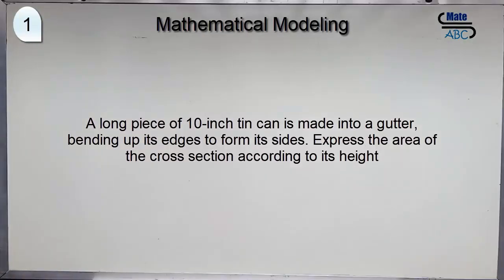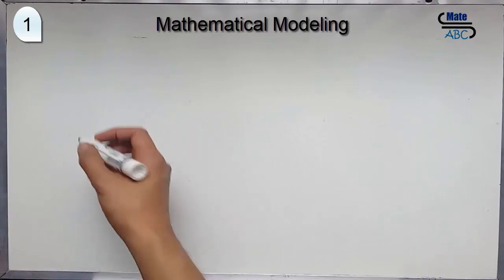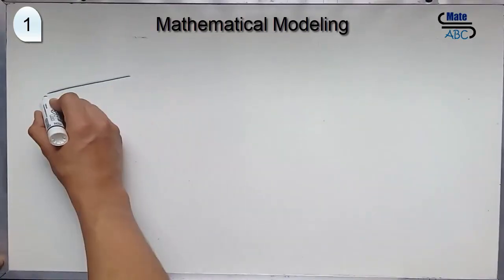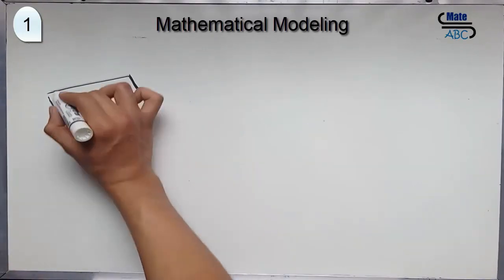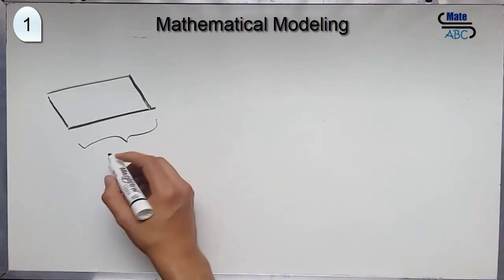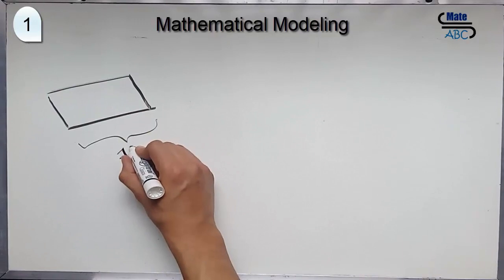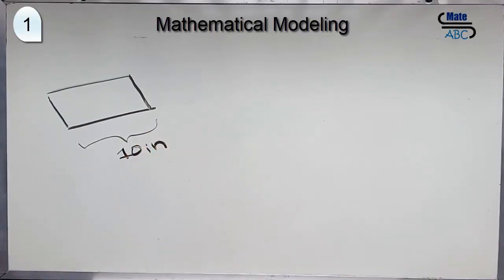We have to find the variable. As you can see, this is our large piece. We have this length side is 10-inch. But, you will bend up the edge.